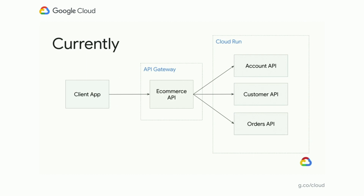Now there's just one problem — that API is wide open to the internet. So anyone at this point can make a call to our API and it's going to respond with data. What we'd like to do is put in place some security so that not just anybody can call into our API, but only clients that we authorize. So let's jump back into the demo and look at how we can use API Gateway to add API key security to provide a more secure API for our clients.